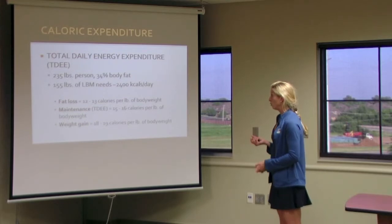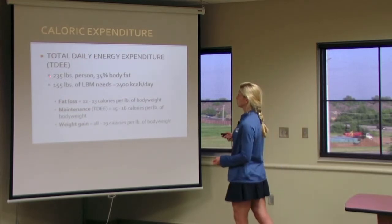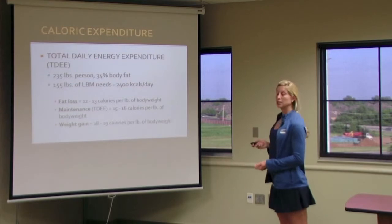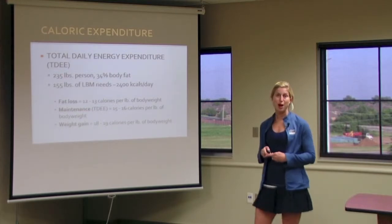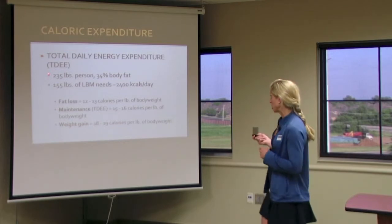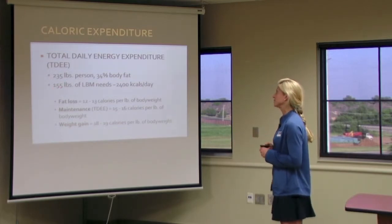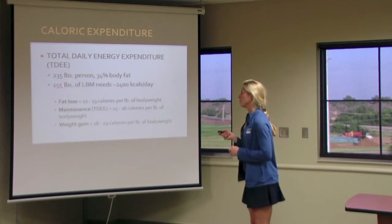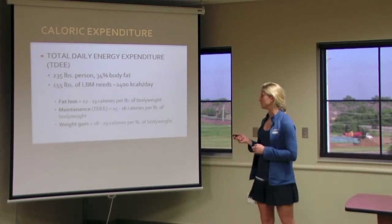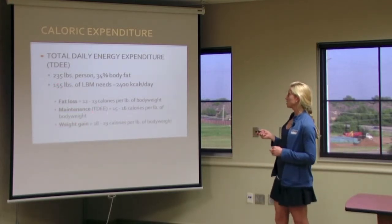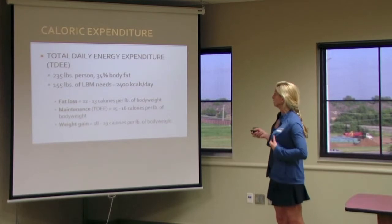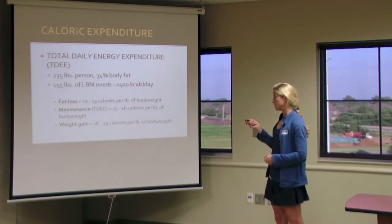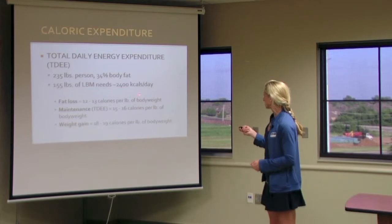In this example, we are looking at a 235-pound person's lean body mass. The person weighs 235 pounds, and 34% of that is fat mass, which means 155 pounds is lean body mass. Based on that number times what their goal is, we figure out how many calories they need per day. This person is trying to lose weight based on the number.